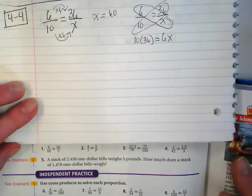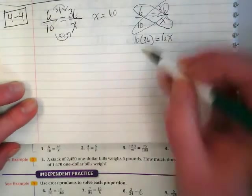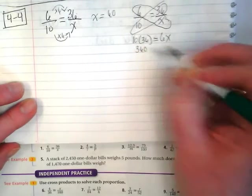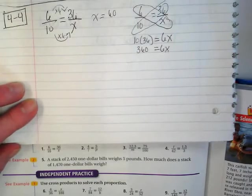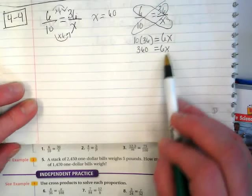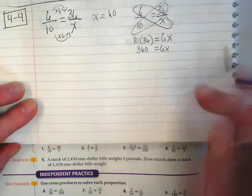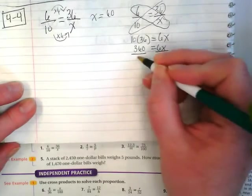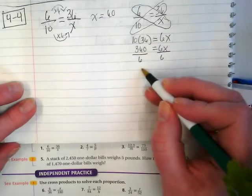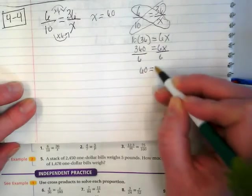We can use cross-multiplication and division to find out what our X is. This is 360 is equal to 6X. Now I have a one-step equation. And if I want to find out what the X is, I want to get it by itself. So I would divide both sides by 6. We divide by 6. And we end up with 60 equals X.